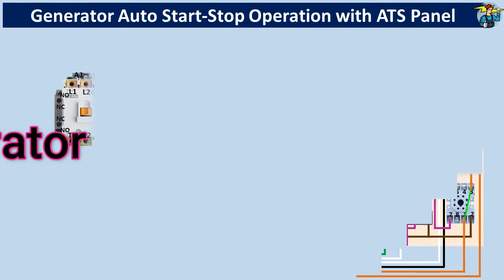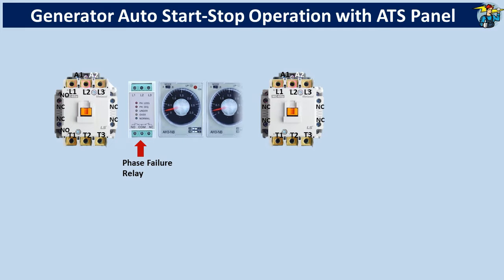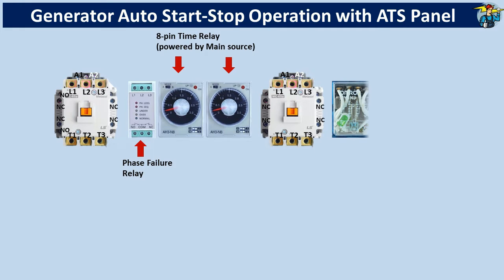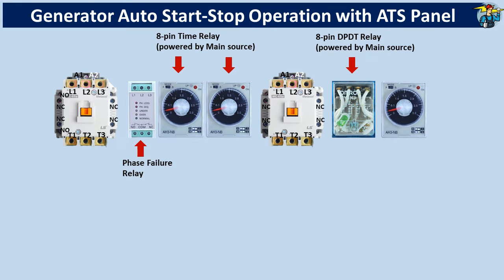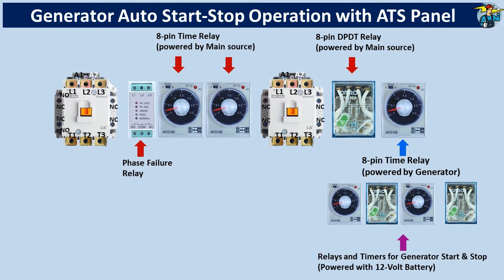We require 2 magnetic contactors for mains and generator power, and a phase failure relay to monitor any fault on the incoming 3-phase mains supply. 2 time relays and a DPDT relay operational with mains supply, and another time relay powered from the generator side. A timer and relay operational with 12V battery for generator automatic start connection.